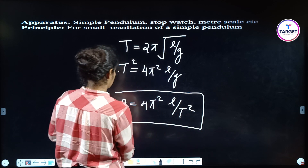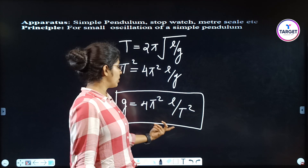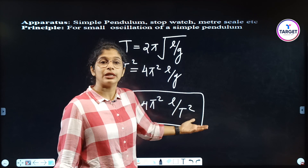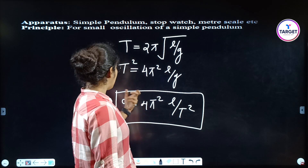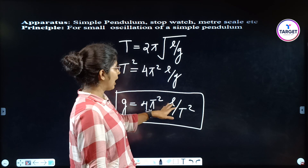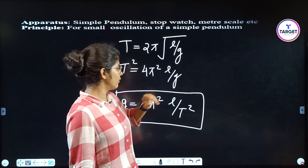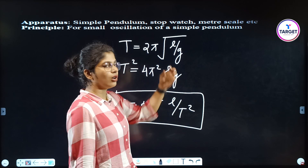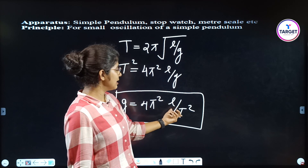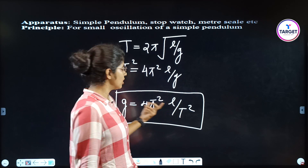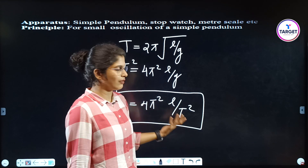This is very important — this equation will be used in our calculations. L is the length of the thread, T is the time period, and g is the acceleration due to gravity.